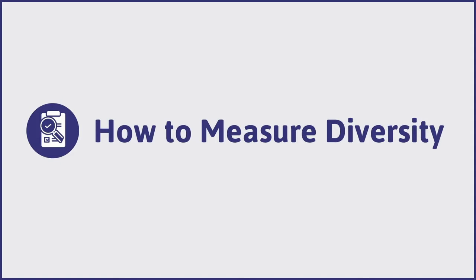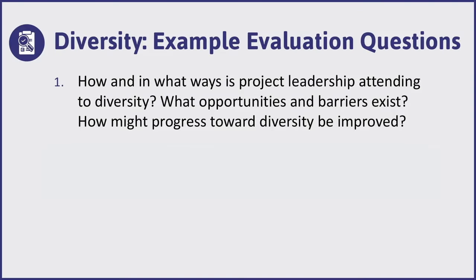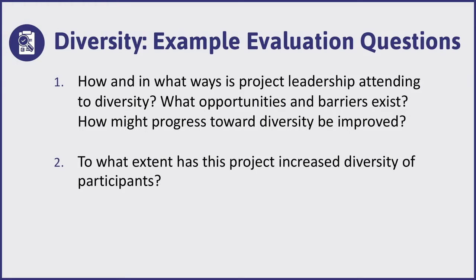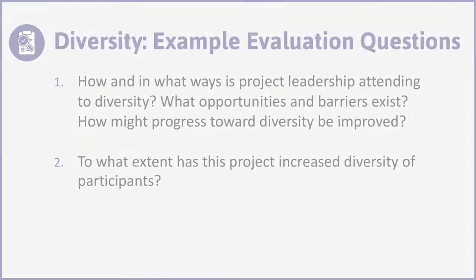What we found, and what you all might have experienced, is that diversity is really one of the easiest and most straightforward of these constructs to measure. Here are some example evaluation questions you might utilize: How and in what ways is project leadership attending to diversity? What barriers and opportunities exist? How might progress towards diversity be included? It's really important that we ask formal evaluation questions to get at diversity, equity, and inclusion. To what extent has a project increased diversity of participants? Most projects have diversity goals, so you could ask more specific targeted questions.